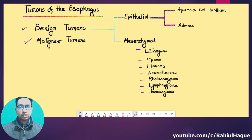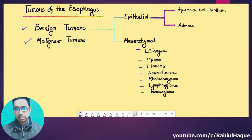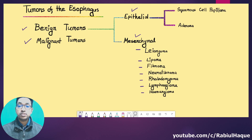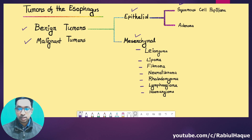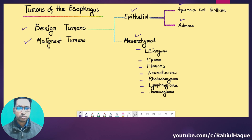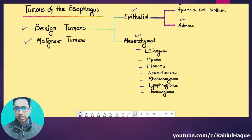The examiner may ask you what are the benign tumors of the esophagus. We can classify them under two broad headings: one is epithelial origin and the other group is of mesenchymal origin. The epithelial benign tumors of the esophagus are mainly of two types: one is known as squamous cell papilloma and the other type is known as adenoma. In order to understand these terms, first we have to know the normal histology of the esophagus.